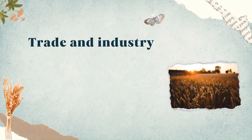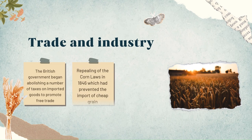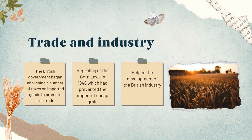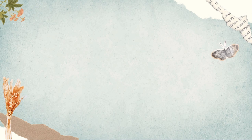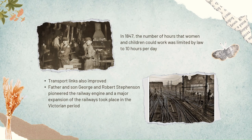Trade and Industry. Britain continued to be a great trading nation. The government began to promote policies of free trade, abolishing a number of taxes on imported goods. One example was the repealing of the Corn Laws in 1846, which had prevented the import of cheap grain. The reforms helped the development of British industry because raw materials could now be imported cheaply. In 1847, the number of hours that women and children could work was limited by law to 10 hours per day. Better housing began to be built for workers. Transport links also improved. Just before Victoria came to the throne, George and Robert Stevenson pioneered the railway engine, and a major expansion of the railways took place in the Victorian period. Railways were built throughout the Empire.